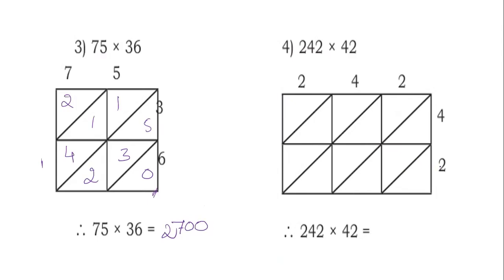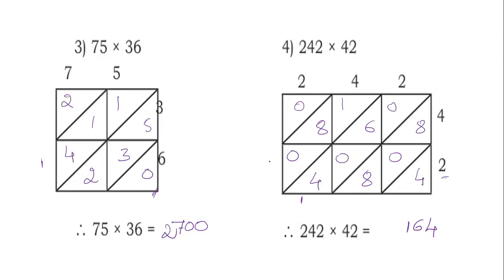Next example: 242 into 42. Starting from 2: 2 times 2 is 4, 2 times 4 is 8, 2 times 2 is 4. Then 4 times 2 is 8, 4 times 4 is 16, 4 times 2 is 8. Adding diagonals: 1 plus 4 is 5, 5 plus 6 is 11, put 1 carry 1; continuing gives 10164 as the answer.